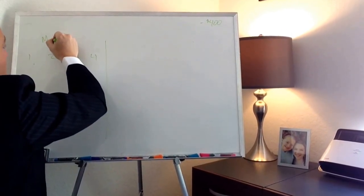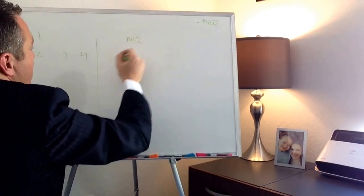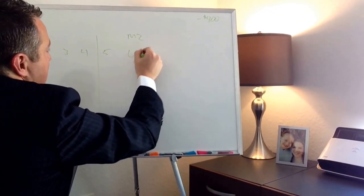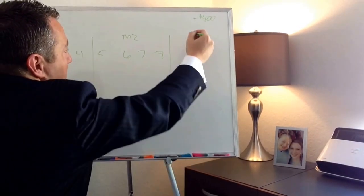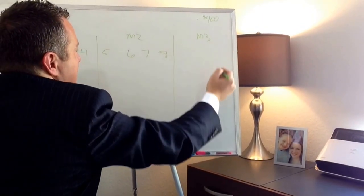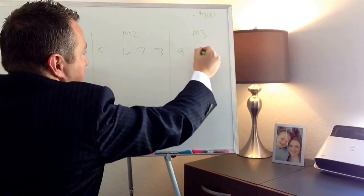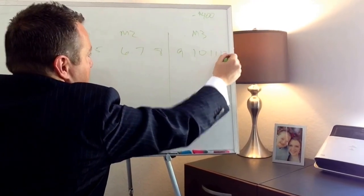And then I'm going to divide them up by months here. So month 1, month 2, weeks 5, 6, 7, 8, and then your third month in the business, weeks 9, 10, 11, and 12.